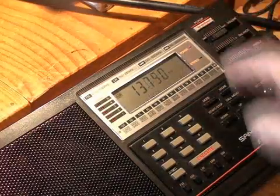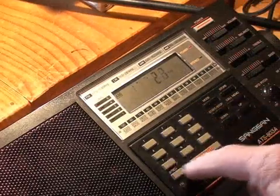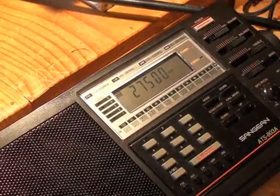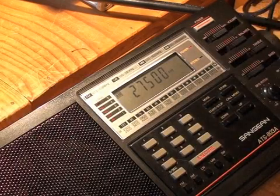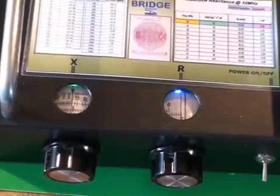So now we turn on the receiver, and we tune it to 27.5 megahertz. There we go. Turn the gain up. Turn the bridge on. The instructions are to set the reactance dial to zero, and the resistance dial to zero. There they are.